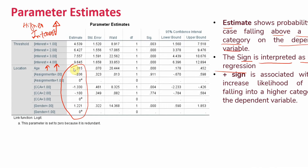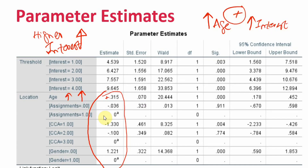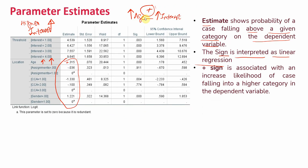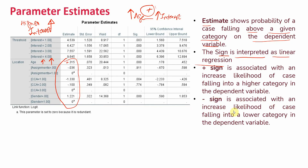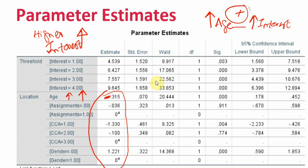For example, there is a positive sign with age — when there is no sign, it is treated as positive. This means that when the age of the respondent increases, the chances of having higher interest in studies also increase, indicating a positive relationship between age and interest in studies. Conversely, if there were a negative sign, an increase in age would mean lower interest.